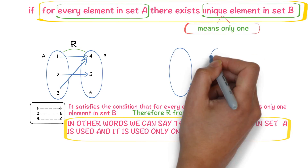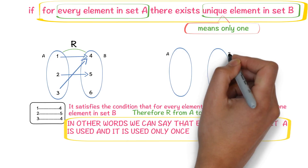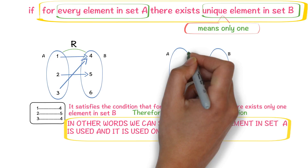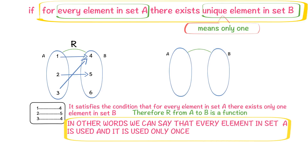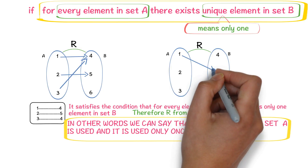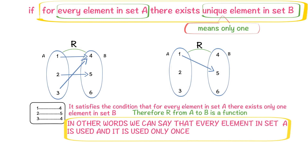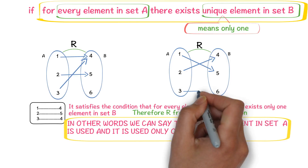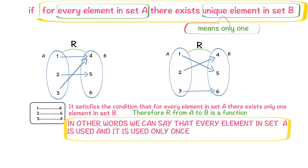Now we will try to understand with one more example. Consider a relation R from A to B. Observe this relation — for every element in set A, there exists a unique element in set B or not. Observe that 1 is related to 5, 2 is related to 4, 3 is related to 6. For every element in set A, it is used only once. With this reason we can say that R is a function from A to B.